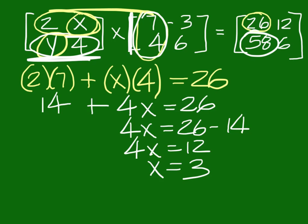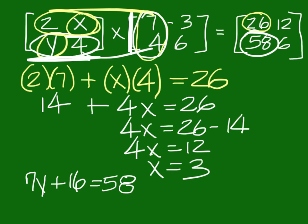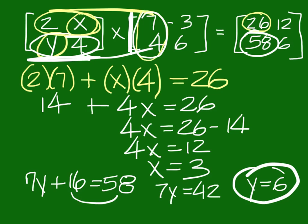So you would set it up down here at the bottom. We could do Y times 7, which is 7Y, and then 4 times 4 is 16, and set that equal to 58. Now if I subtract 16 from 58, I'll come up with 42, and Y would have to be 6. So X is 3 and Y is 6.